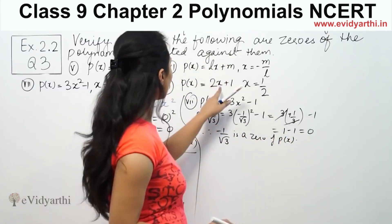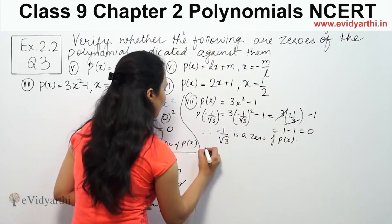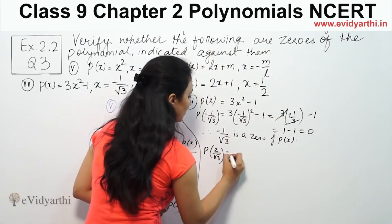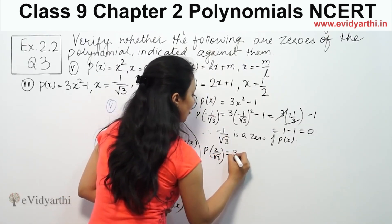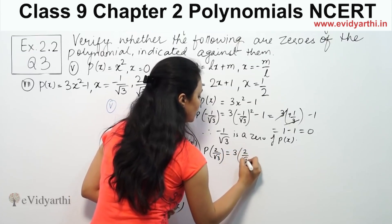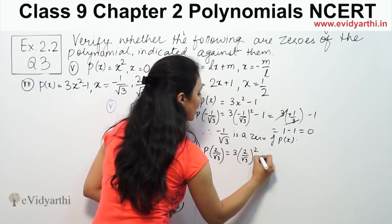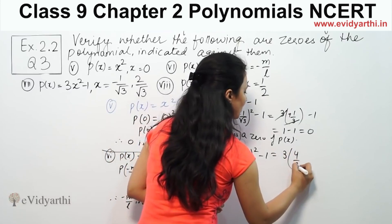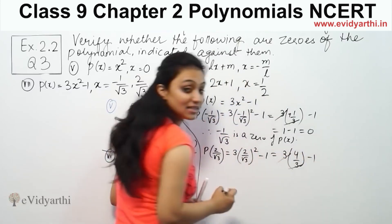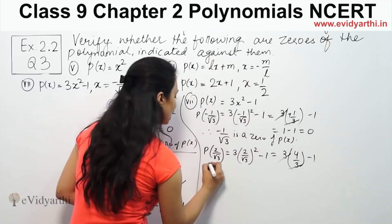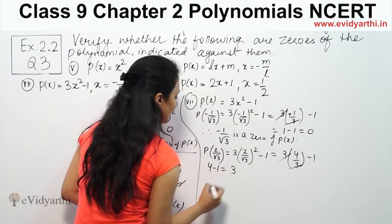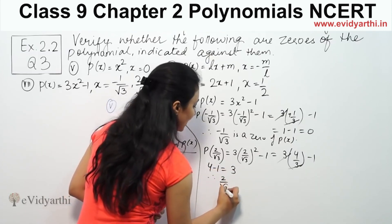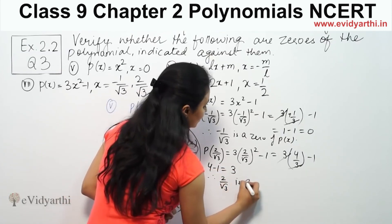Now we check the other value, x equal to 2 by root 3. So p(2/√3) equals 3 times 2 by root 3 squared minus 1, which means 3 times 4 by 3 minus 1, that is 4 minus 1 equals 3. Since the result is not zero, 2 by root 3 is not a zero of p(x).